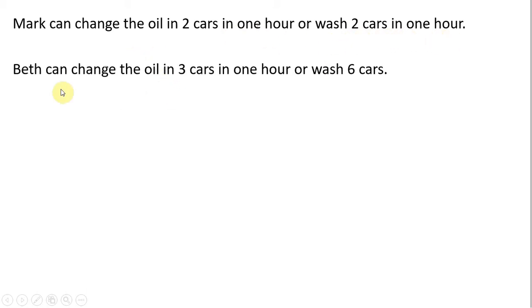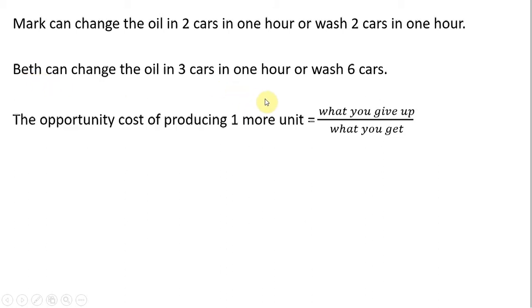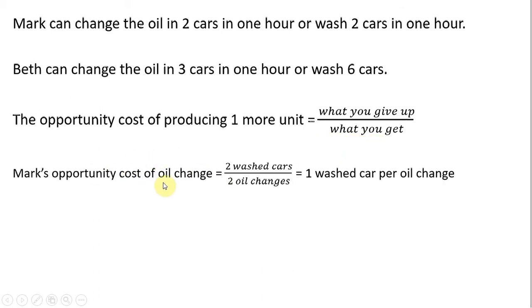Mark can change the oil in two cars in one hour or wash two cars in one hour. To calculate comparative advantage, it's based on being the low opportunity cost producer. We use the formula: what you give up divided by what you get. Mark's opportunity cost of doing one oil change — in an hour's time, he would give up washing two cars and get two oil changes — so Mark's opportunity cost of an oil change is one washed car per oil change.